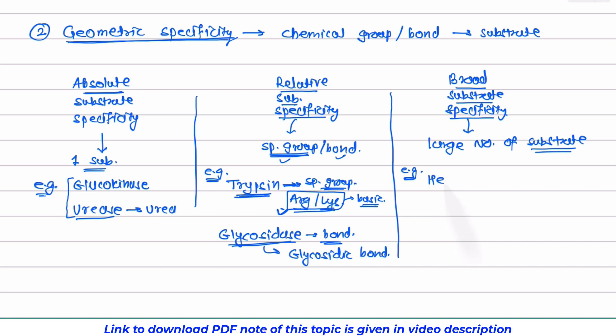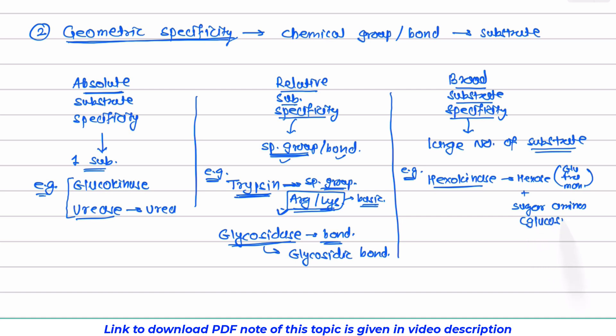Here the first example is hexokinase. Now hexokinase acts on hexosugars and these hexosugars may be glucose, fructose, mannose like that. It also acts on sugar amines, for example, glucosamine.